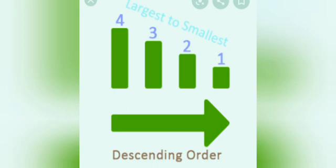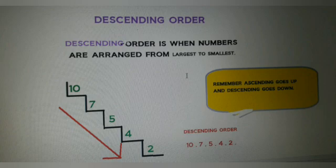As we can see in the picture, 10, 7, 5, 4, 2. So, 10 is the largest and 2 is the smallest. So in descending order, we arrange from 10, 7, 5, 4, 2.